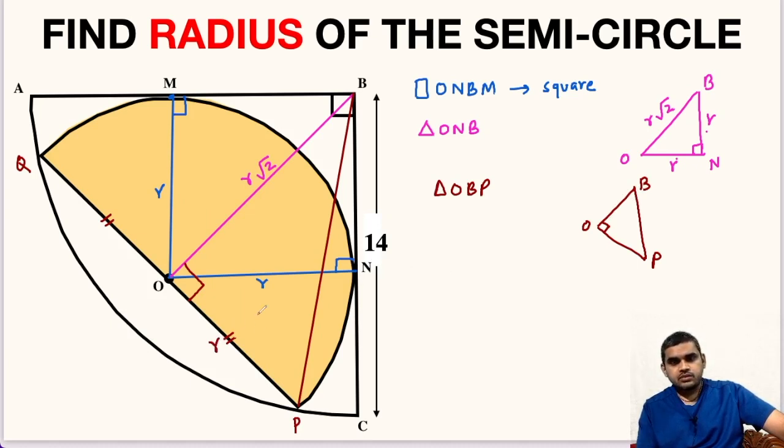Now, in this triangle, OP is equal to small r. What will be BP? BP is the radius of this quarter circle. The quarter circle has a center at point B - this is point C, this is point A. Now, point P lies on the circumference of this quarter circle. Therefore, this is also the radius of this quarter circle. The radius of the quarter circle is 14, so PB will also be equal to 14 units. Here let us write 14, and what is OB? OB we found is R root 2.